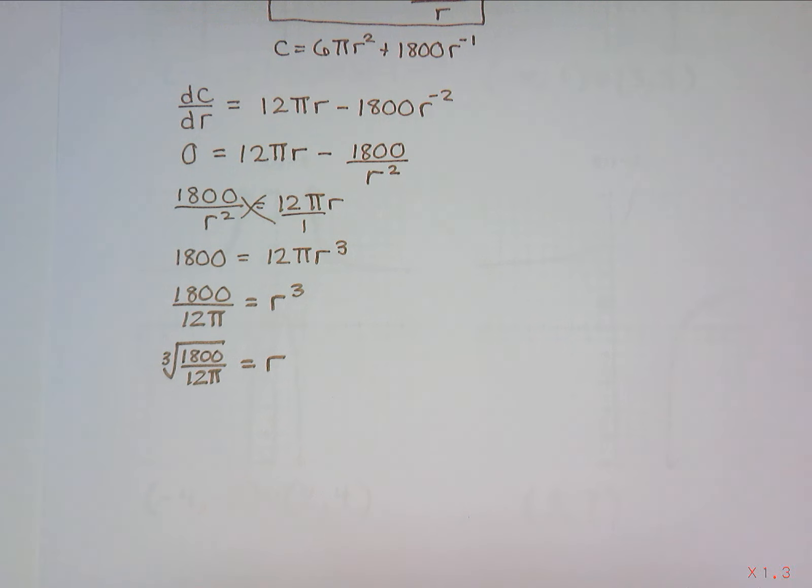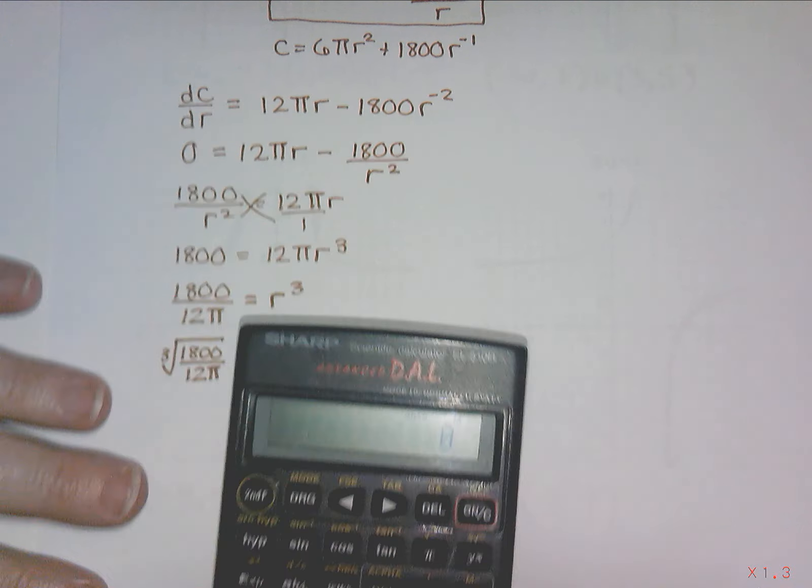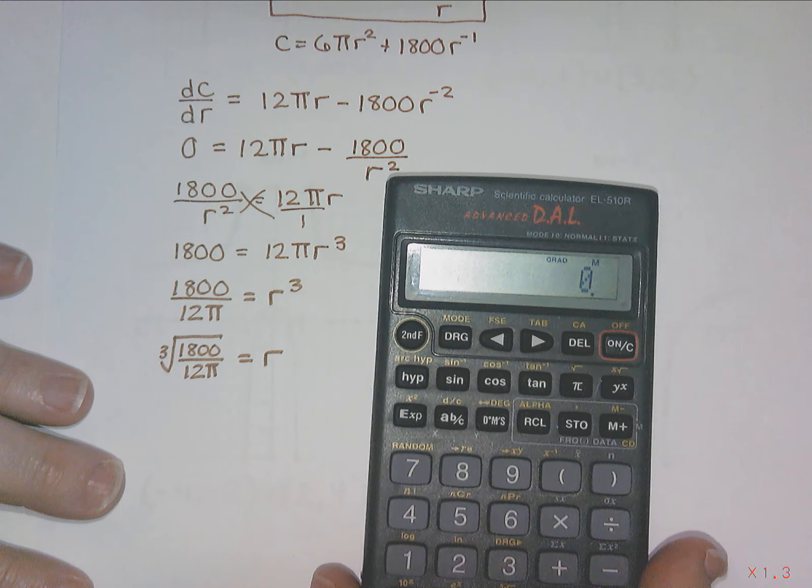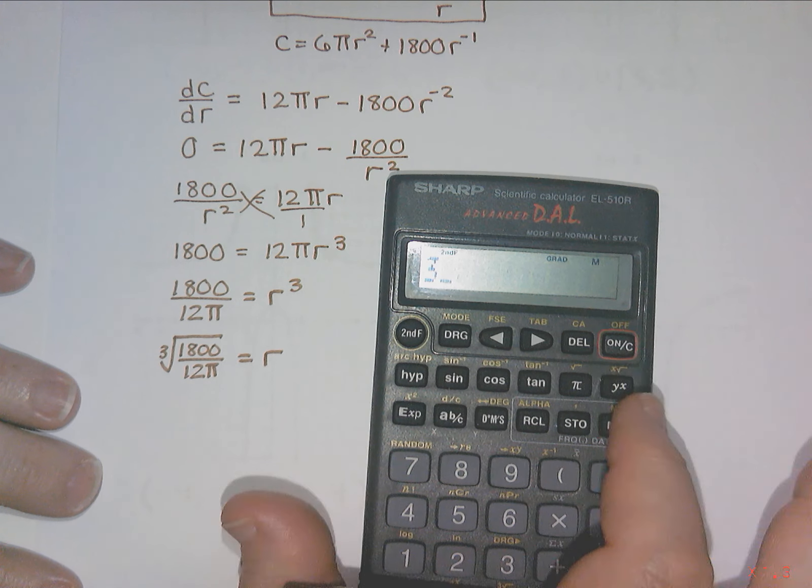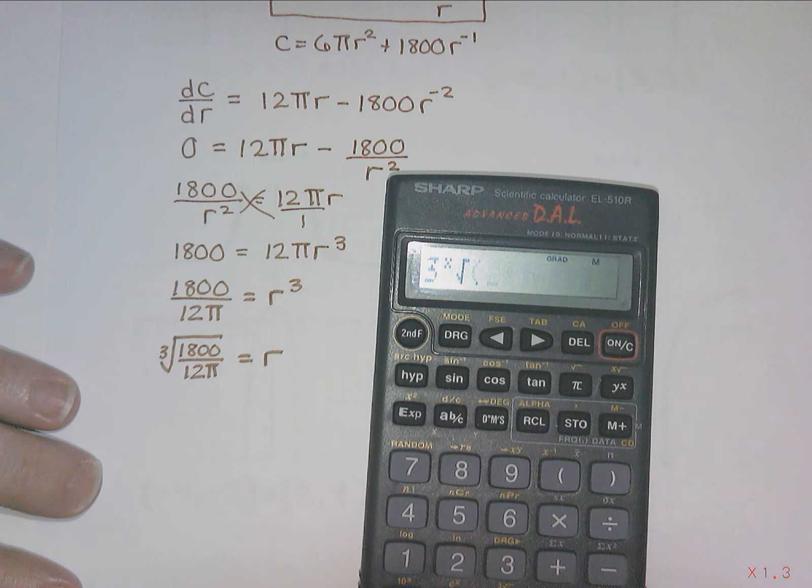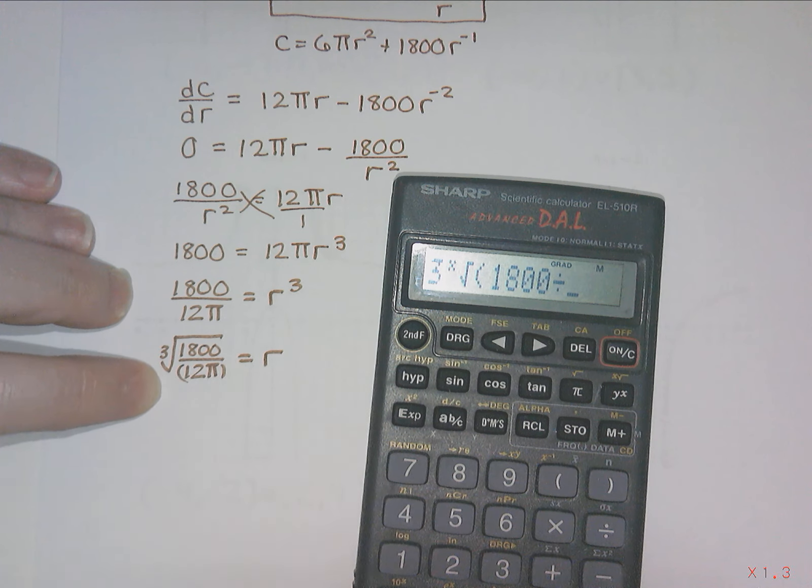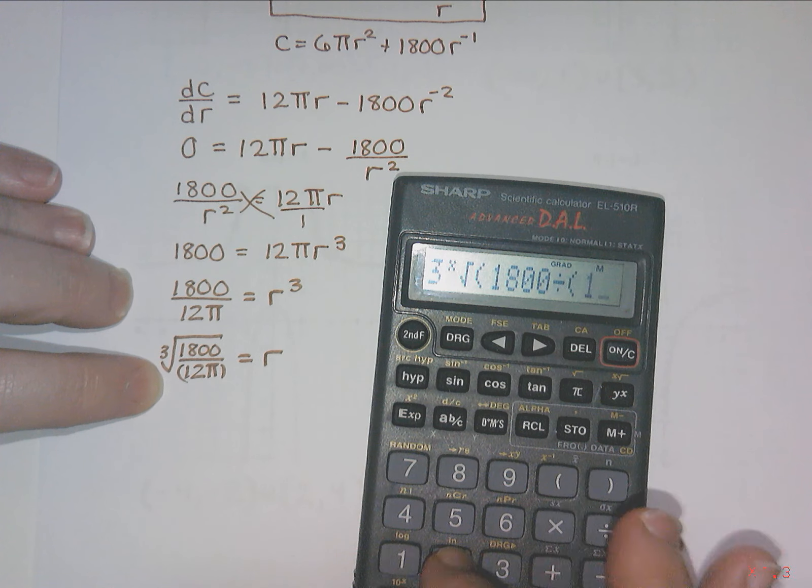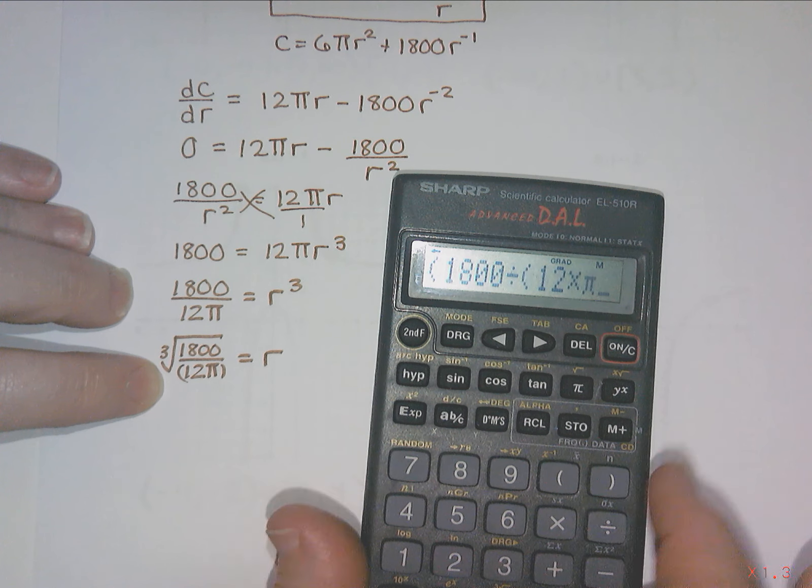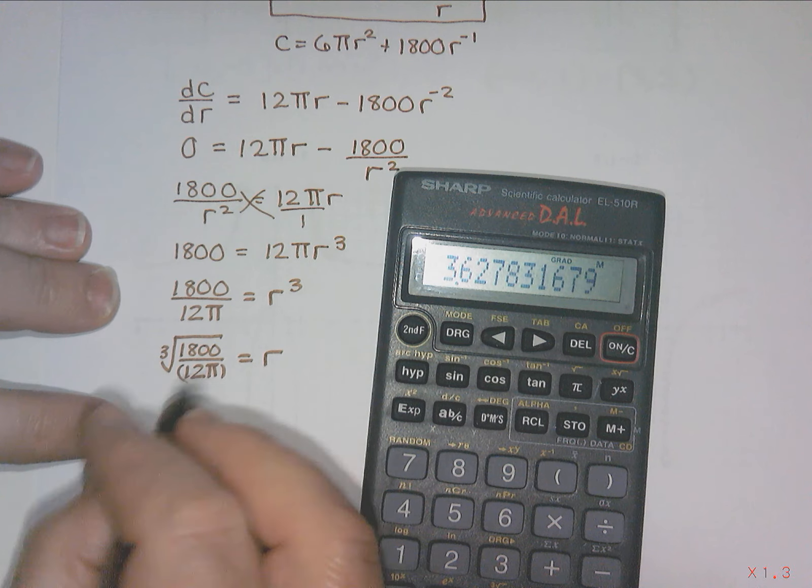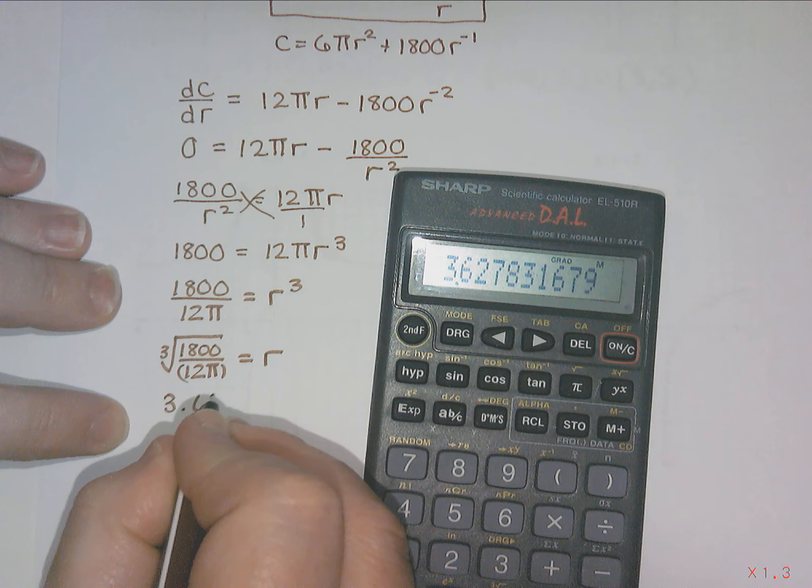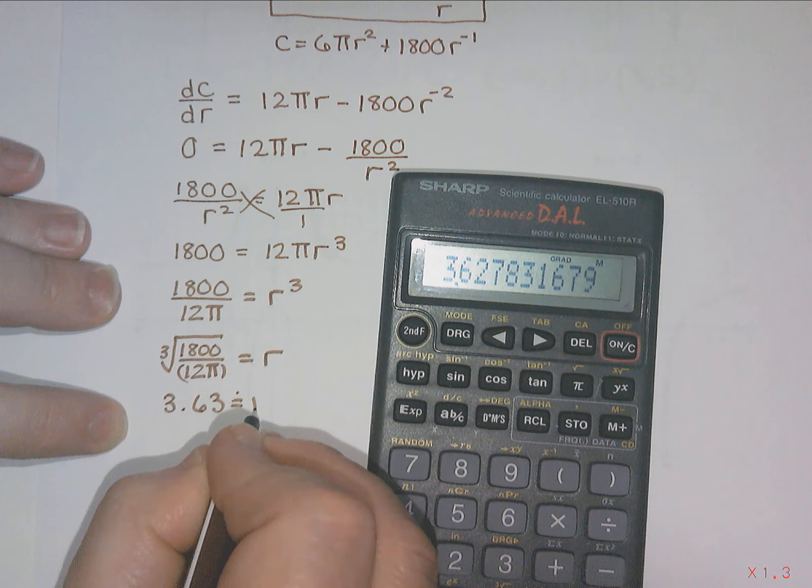It did not mention anything about a decimal on this page, but on the first page underneath the title, it did say we were allowed to round to two decimal places. So I think I am going to work this out as a decimal. I'm going to do the cube root and then bracket 1800 divided by, and then I need to tell my calculator the 12 and pi are together. So I have to do bracket 12 times pi, close bracket, close bracket.